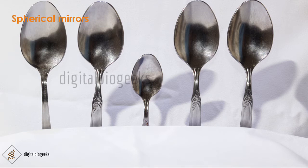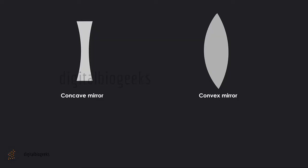Moving on to spherical mirrors — have you seen curved mirrors? A steel spoon is an example of a curved mirror. The inside of the spoon is curved inward and the outside is curved outward. An inwardly curved mirror is called a concave mirror, and an outwardly curved mirror is called a convex mirror. These are commonly called spherical mirrors because they are a part of a sphere.